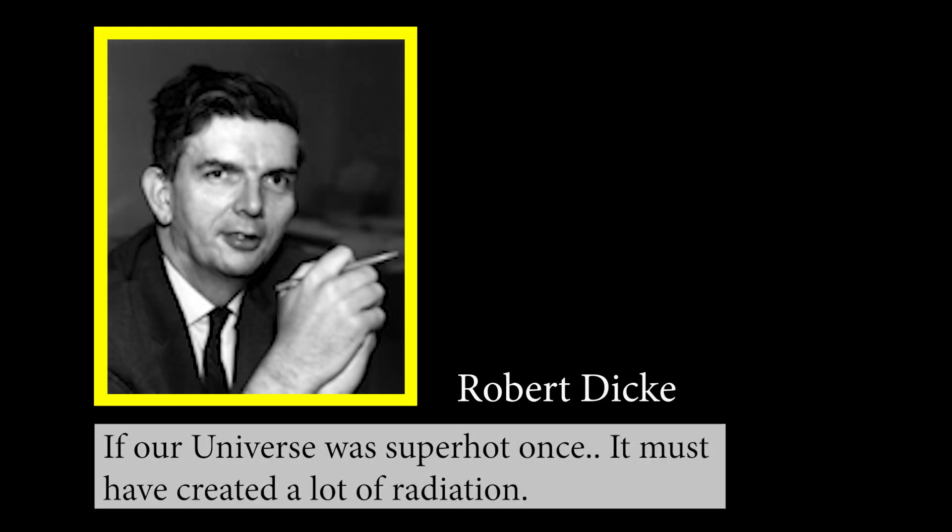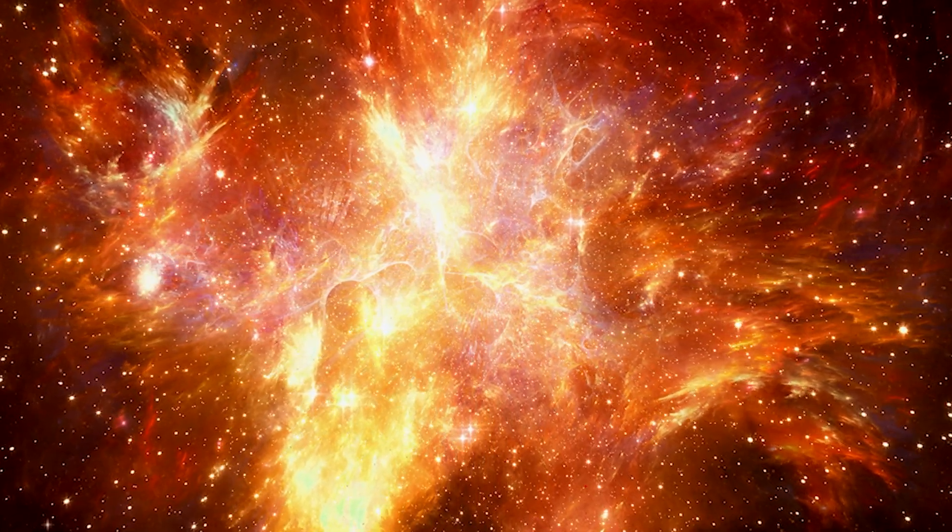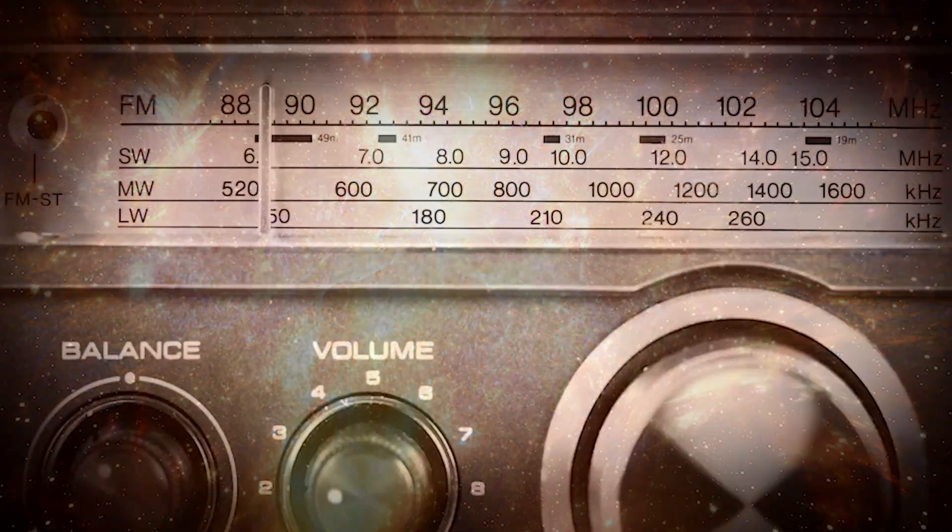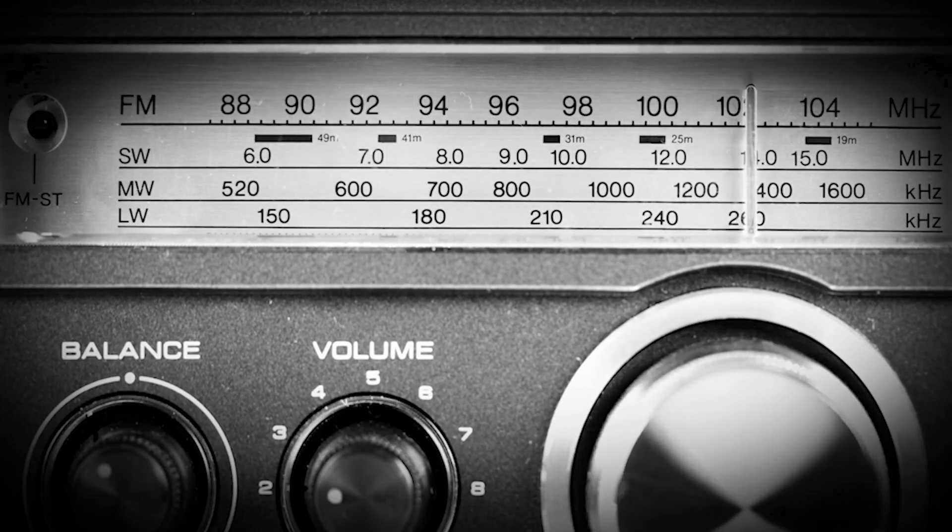At the same time, physicist Robert Dick theorized that if our universe was super-hot at its beginning, it must have created a lot of radiation. The same radiation would still exist throughout the universe. He visited Penzias and Wilson at Bell Labs and confirmed their findings.